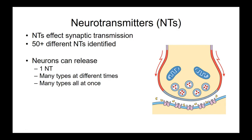Even though the motor neuron releases a single type of neurotransmitter, most neurons are more promiscuous — they'll release more than one type. Additionally, neurons receiving information have receptors for a variety of neurotransmitters. Neurons can release one neurotransmitter or many, sometimes all at once, with a whole bunch of regulation that is beyond the scope of this course.